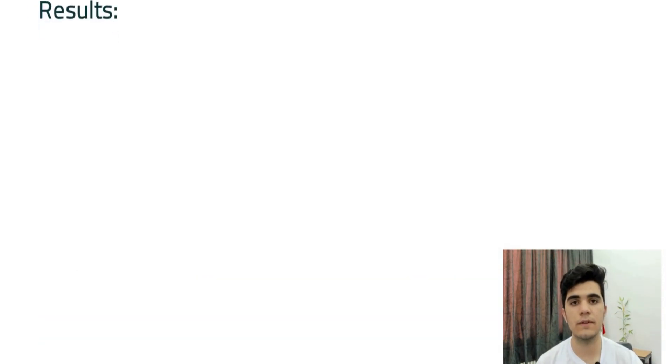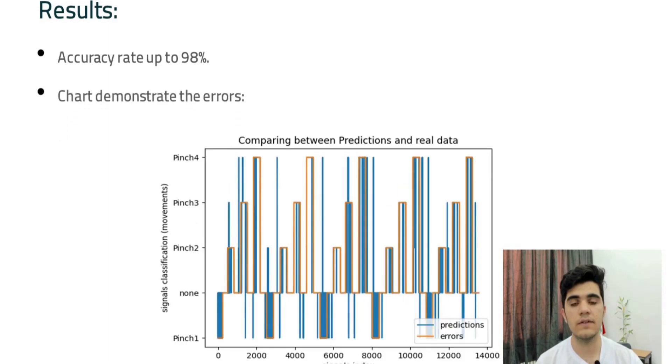And now we move to the results. The proposed method proved its efficiency and it was able to distinguish between 12,000 EMG signals and give each one an accurate class, and the accuracy rate reached up to 98%. And this is a figure that illustrates the predictions and the errors.